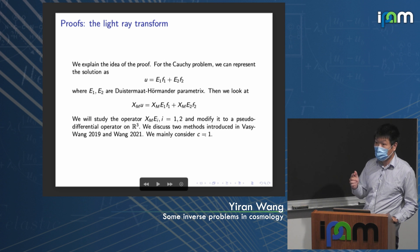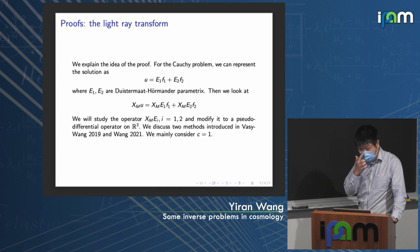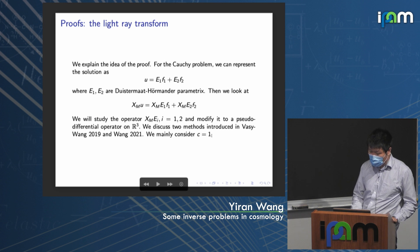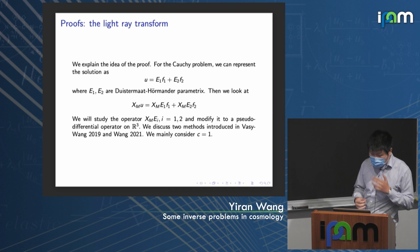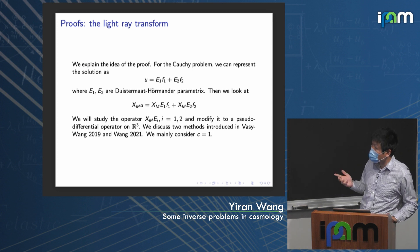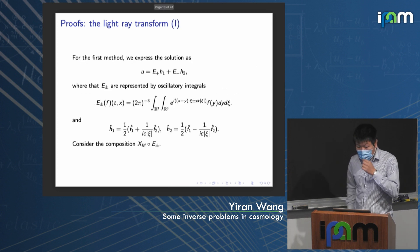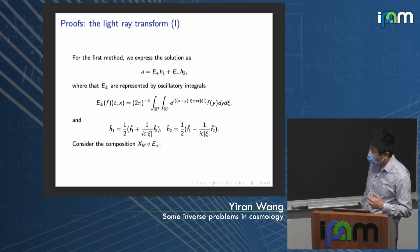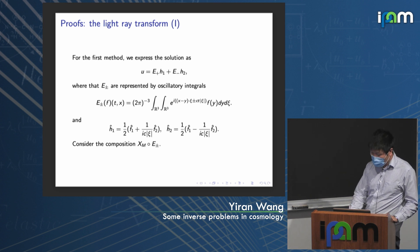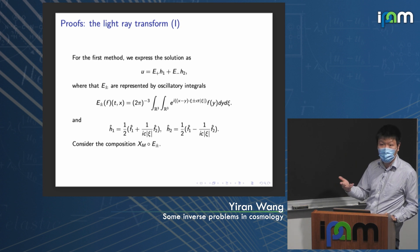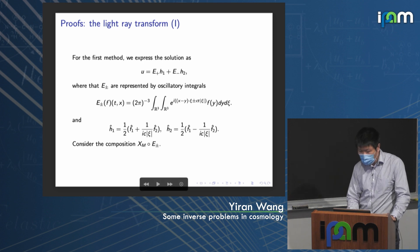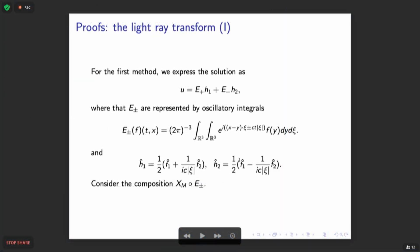We mainly consider the case c=1, since c<1 is easier, and c=1 corresponds to gravitational perturbations. We discuss two methods. For the first method, we use the oscillatory integral representation of E₁, E₂. For the simple wave equation, the solution can be written using the Fourier transform: E± are oscillatory integrals in terms of the Fourier-transformed initial data h₁, h₂. We look at the composition Xm ∘ E±.